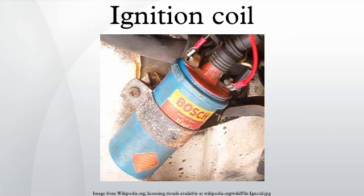Early gasoline internal combustion engines used a magneto ignition system, since no battery was fitted to the vehicle. Magnetos are still used in piston engine aircraft. The voltage produced by a magneto is dependent on the speed of the engine, making starting difficult. A battery operated coil can provide a high voltage spark even at low speeds, making starting easier. When batteries became common in automobiles for cranking and lighting, the ignition coil system displaced magneto ignition.